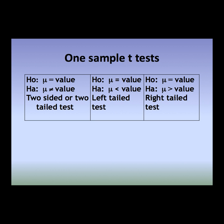Both One-Sample Z-Tests and T-Tests test the null hypothesis H0: mu equals some value, versus an alternative hypothesis. For a two-sided or two-tailed test, the alternative uses the not-equal sign. For a left-tailed test, the alternative uses the less-than sign. For a right-tailed test, the alternative uses the greater-than sign. Both tests share the same notation for the null and alternative hypothesis.